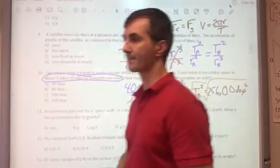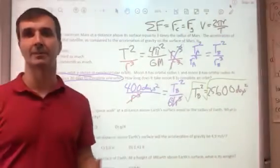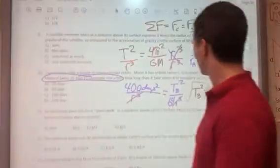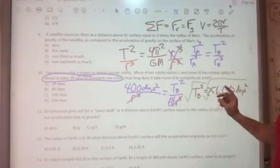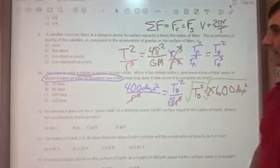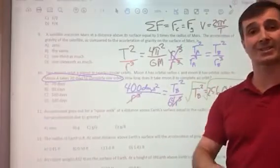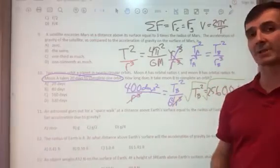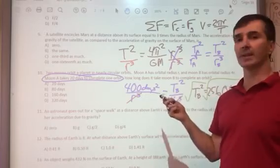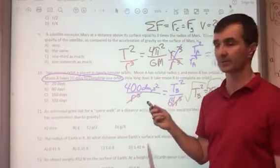So T_B² equals 25,600 days squared. I'm going to take the square root of that to find the actual period. You do that; I don't have a calculator handy.